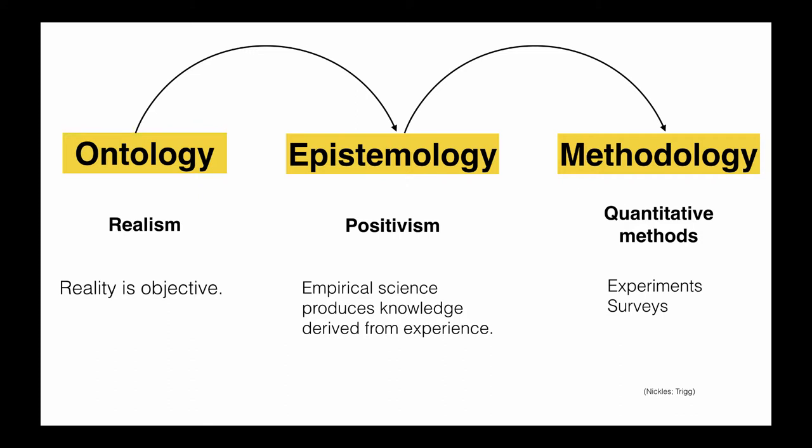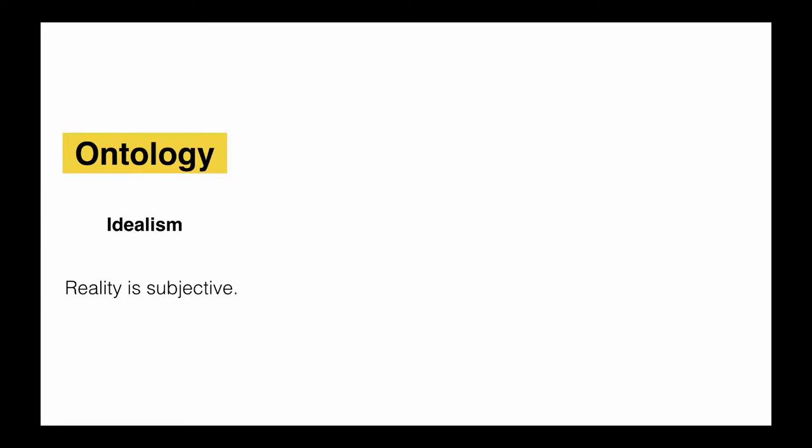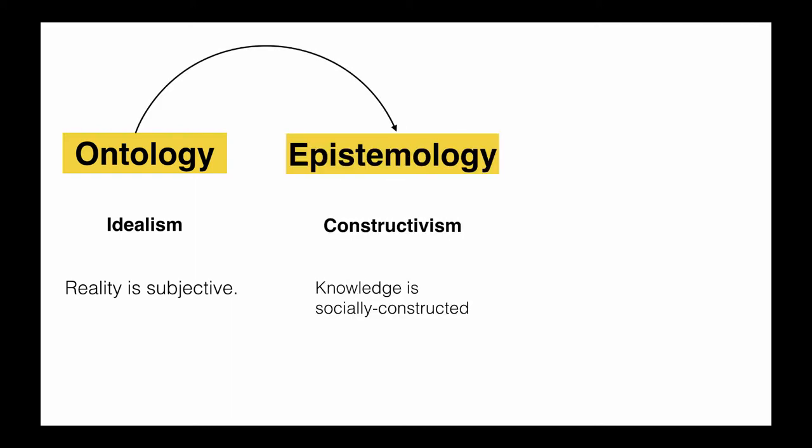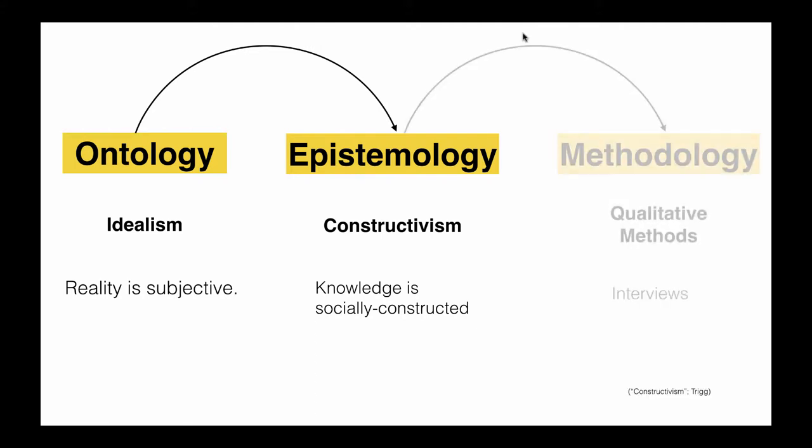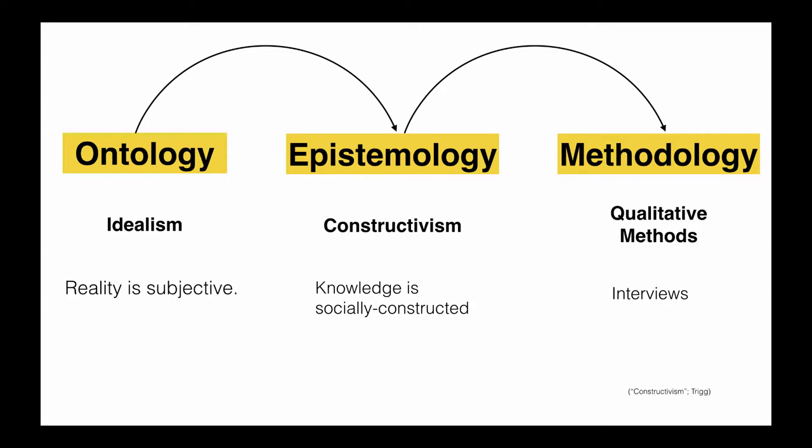Quantitative methods are preferred in this case. On the other hand, an idealist ontology believes that reality is subjective. It does not exist independently. In fact, reality is only there if there is someone who can observe it and perceive it. In terms of epistemology, constructivism is a viable alternative. In this view, we construct knowledge through social interactions and through interpretations of experiences and phenomena. A preferred method in this case would be the interview.